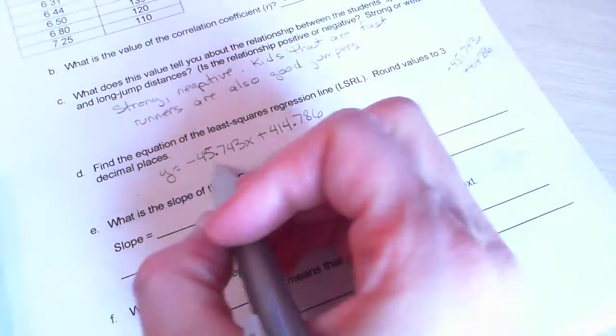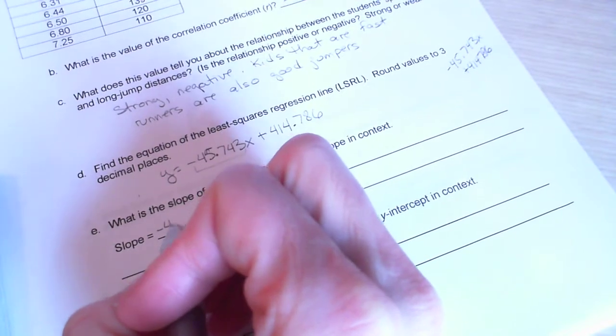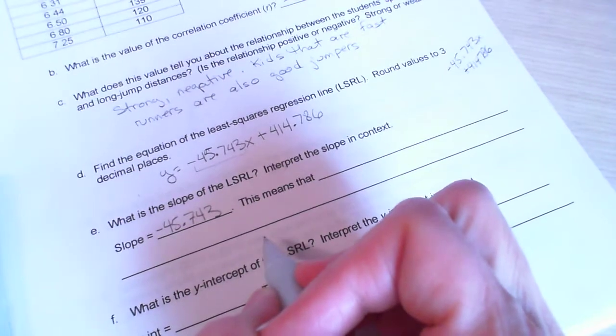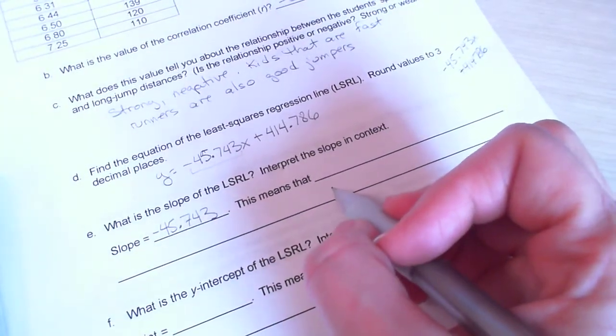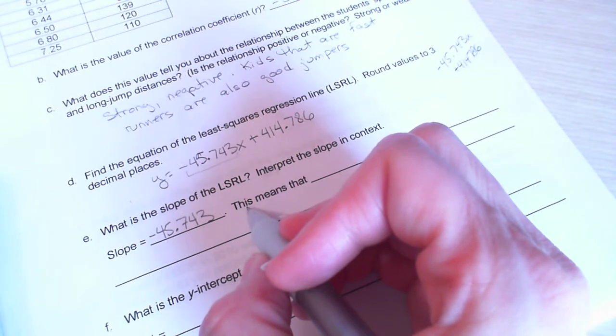What is the slope? Well, that's always the coefficient on my x. So my slope is negative 45.743. And what does that mean? Notice in this example, we didn't give it to you. We're asking you to write it. So remember, slope, you always need to talk about a single increase in the x value.